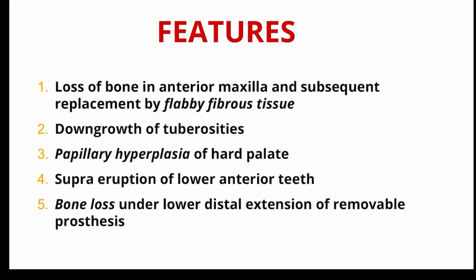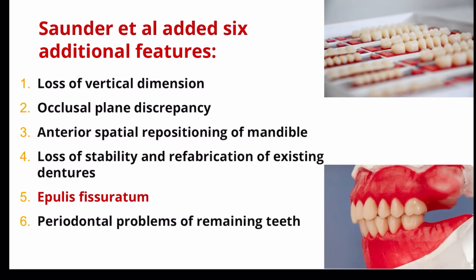The features are: flabby fibrous tissue, downgrowth of tuberosities, papillary hyperplasia, supra-eruption of lower anterior teeth, and bone loss under the lower distal extension of the removable prosthesis. Apart from these five features, Sonder et al. added six additional features: (1) loss of vertical dimension, (2) occlusal plane discrepancy, (3) anterior spatial repositioning of the mandible, (4) loss of stability and refabrication of existing dentures, (5) epulis fissuratum, and (6) periodontal problems of the remaining teeth.